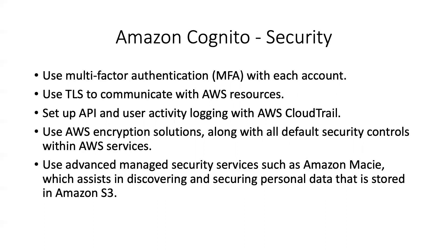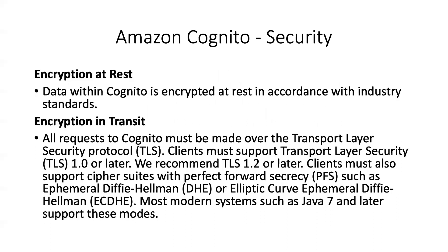Let's look at how Cognito provides data encryption at rest and in transit. Amazon Cognito provides data encryption at rest in accordance with industry standards. Anyone using TLS version 1.0, 1.2 or later, or cipher suites such as DHE or ECDHE — most modern systems such as Java 7 and later support these modes by default. When you establish connectivity to Amazon Cognito from your Java application, all you need is the Cognito user pool ID and the region endpoint. Data is encrypted in transit using TLS and by default all data is encrypted at rest.